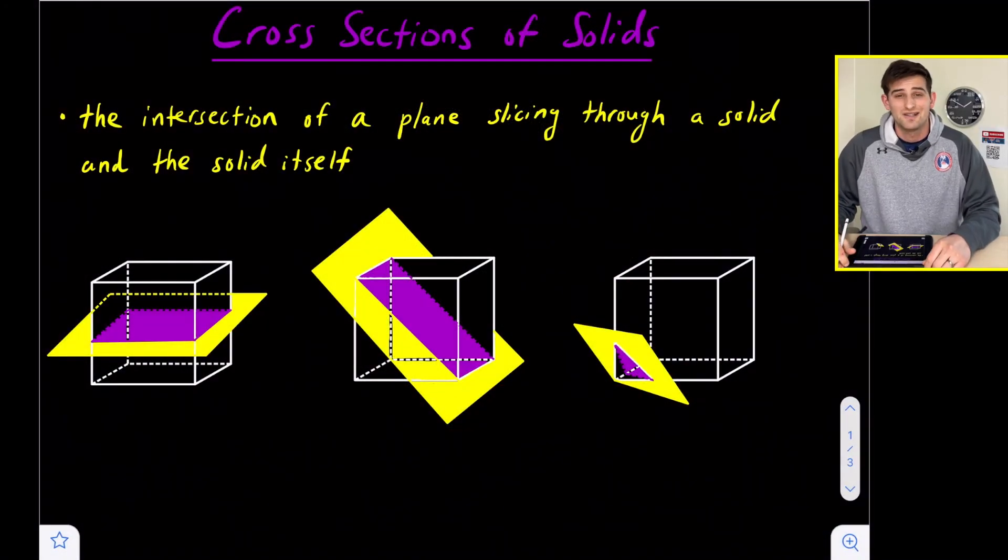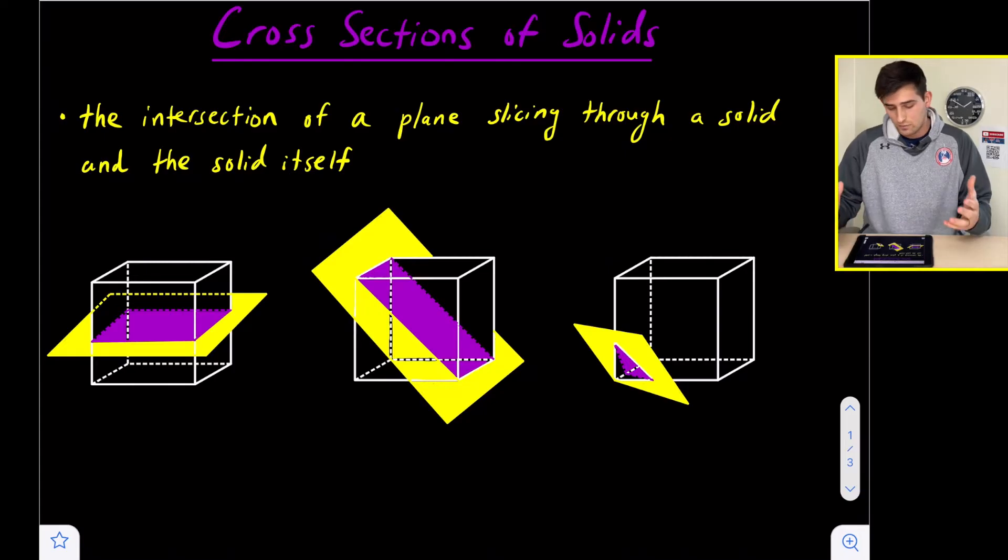Hello everybody, in this video we're going to talk about cross sections of solids. So what is a cross section? It is the intersection of a plane slicing through a solid and the solid itself.